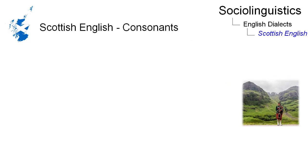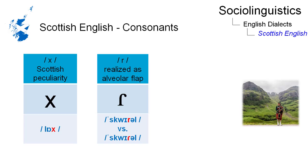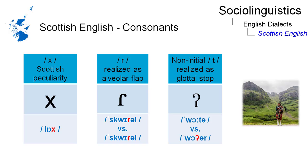Finally, here are some examples with special consonants. The sound as in 'Loch' or in traditional Scottish names is a special feature of Scottish English. The Scottish R sound is usually pronounced as an alveolar flap. And non-initial T is often realized as a glottal stop.